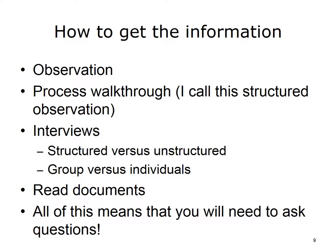In addition to identifying the people you need to get information from, you will need to decide how — by what methodology — you will obtain the information. There are four main ways of obtaining process information from clinic providers and staff. First, observation: watching people do the process. Second, process walkthrough — structured observation. A walkthrough means you pretend you are the object of the process and literally move through the organization as that object would. For example, if it is appointment scheduling, you act as the patient and go through the scheduling part.